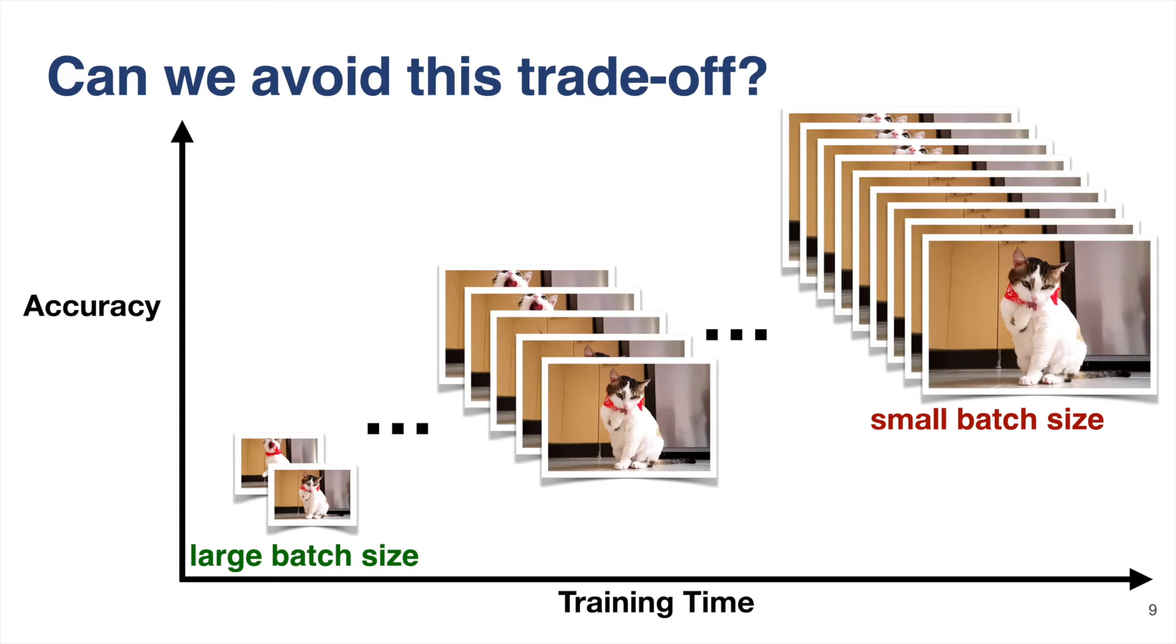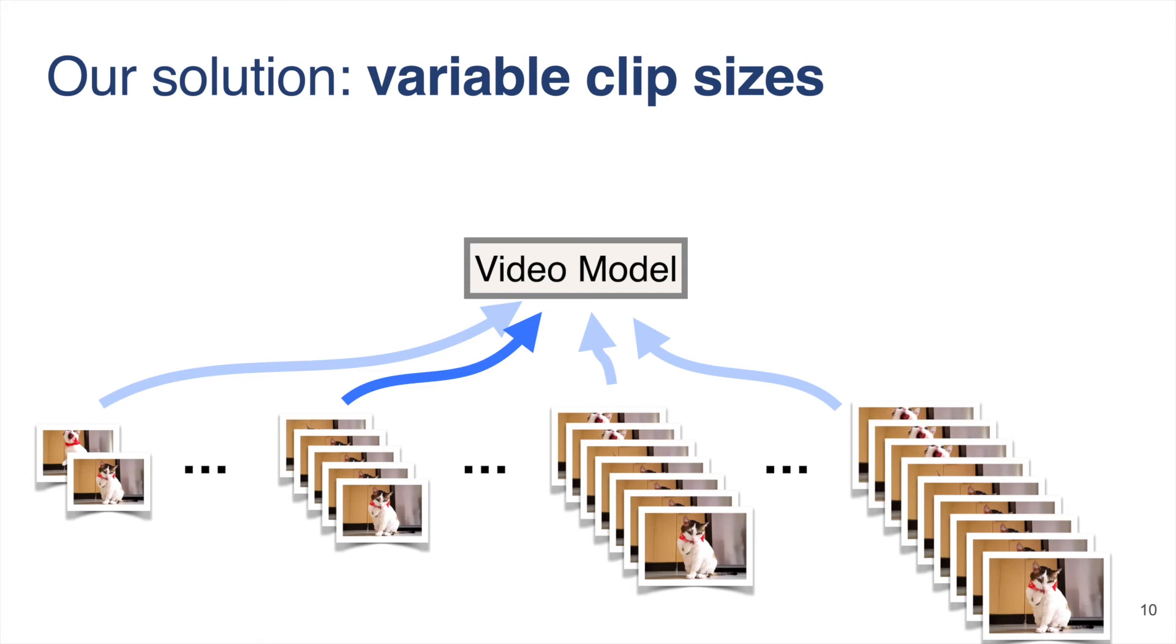Our idea is very simple. Instead of choosing between larger clips and smaller clips, why don't we just use both of them and achieve the best of both worlds? Specifically, we propose to use variable clip sizes during training, and we design schedules to flexibly use all these clips.